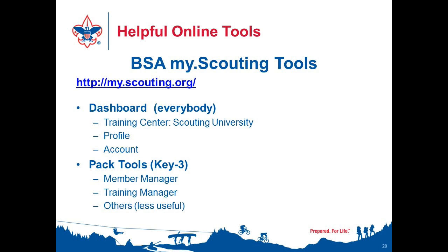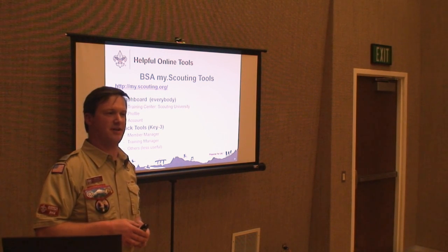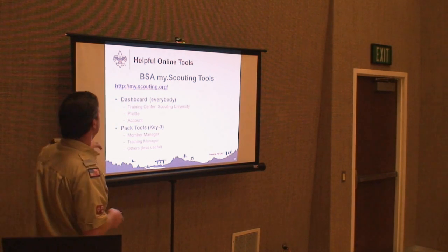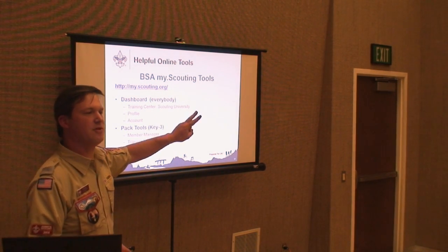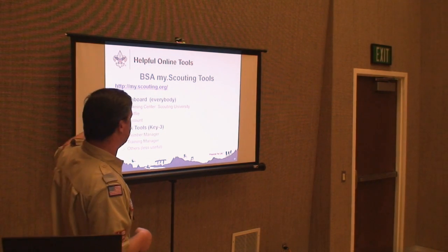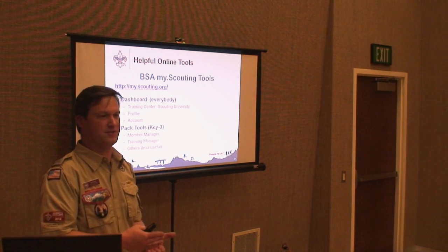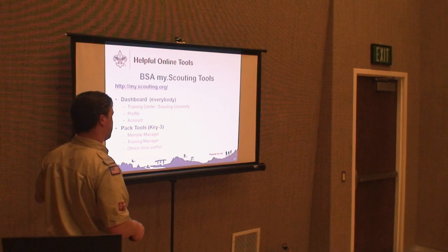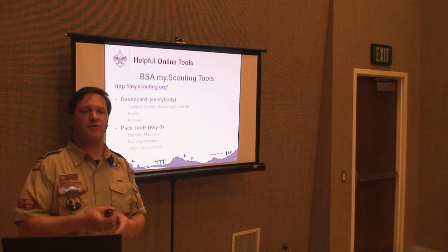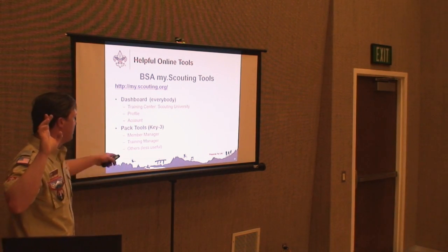My dot scouting — everybody should be at least a little bit familiar with it, since everyone did their youth protection training probably on my.scouting. The key for everybody is the dashboard — everything's under there: training, profile updates, email address, physical address. You can't change your title through the site though; to change your role you have to go down to council and submit an application. There are some great things in here especially if you're key three: cub master, committee chair, or chartered org rep.